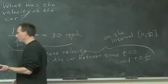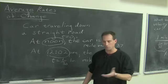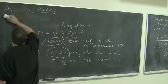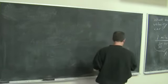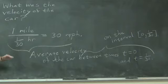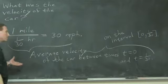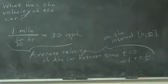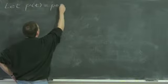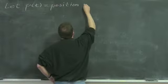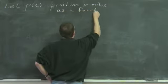Average velocity is something you should already be familiar with. Instantaneous velocity you're also familiar with — you've been in a car and looked at the speedometer. Average velocity is the average rate of change of your position with respect to time. Let P(T) equal your position in miles as a function of T hours from noon.